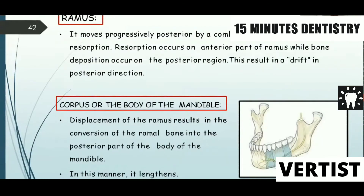The ramus moves progressively posteriorly by a combination of deposition and resorption. Resorption occurs on the anterior surface of the ramus while bone deposition occurs on the posterior surface, resulting in a drift in the posterior direction. Displacement of the ramus results in the conversion of former ramus bone into the posterior part of the body of the mandible, thereby lengthening the body.